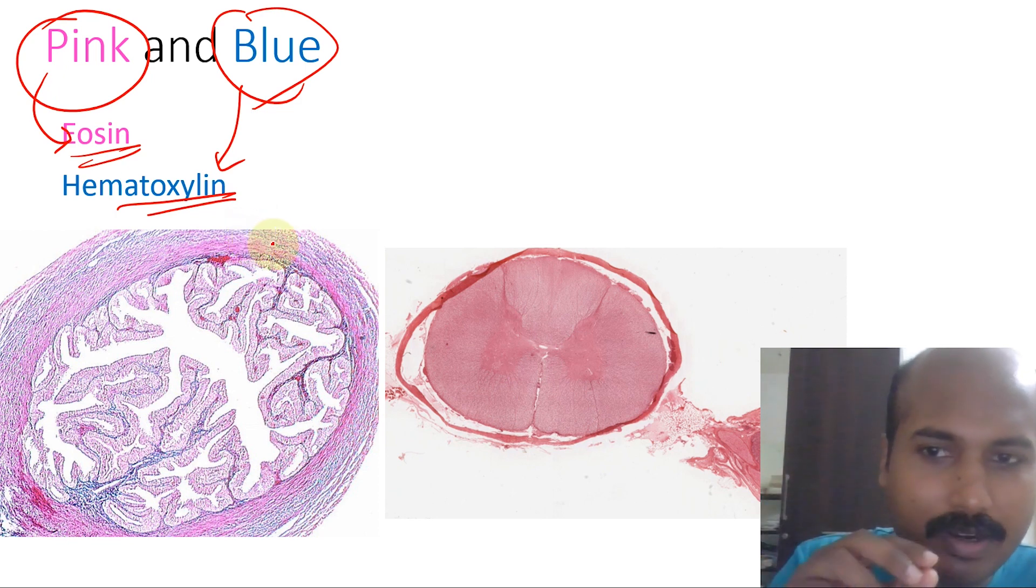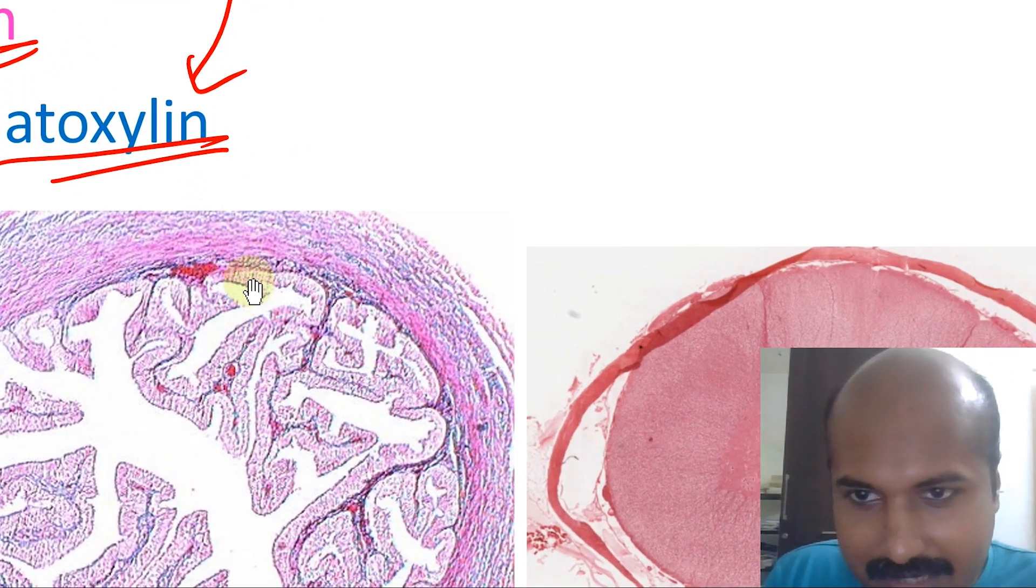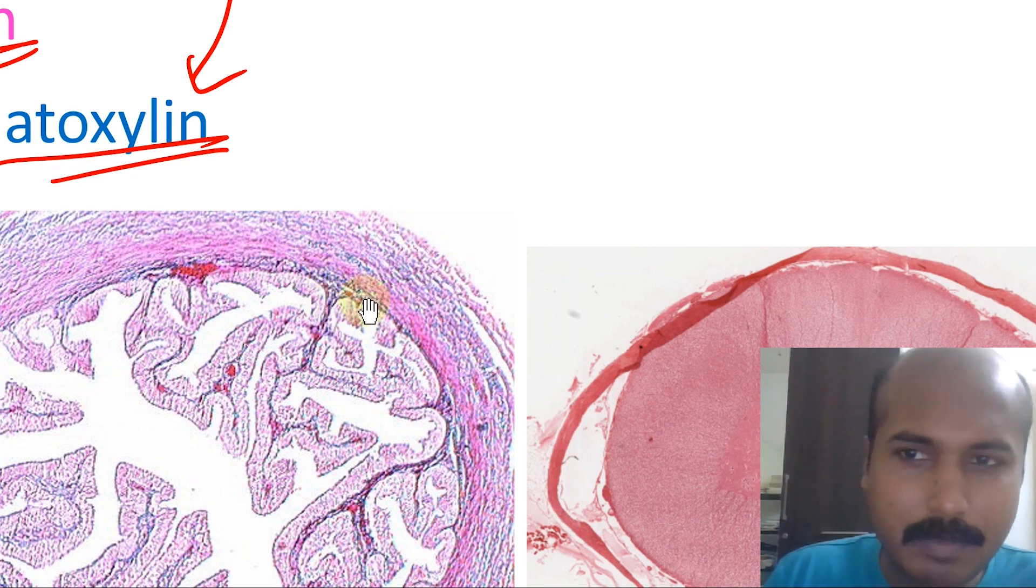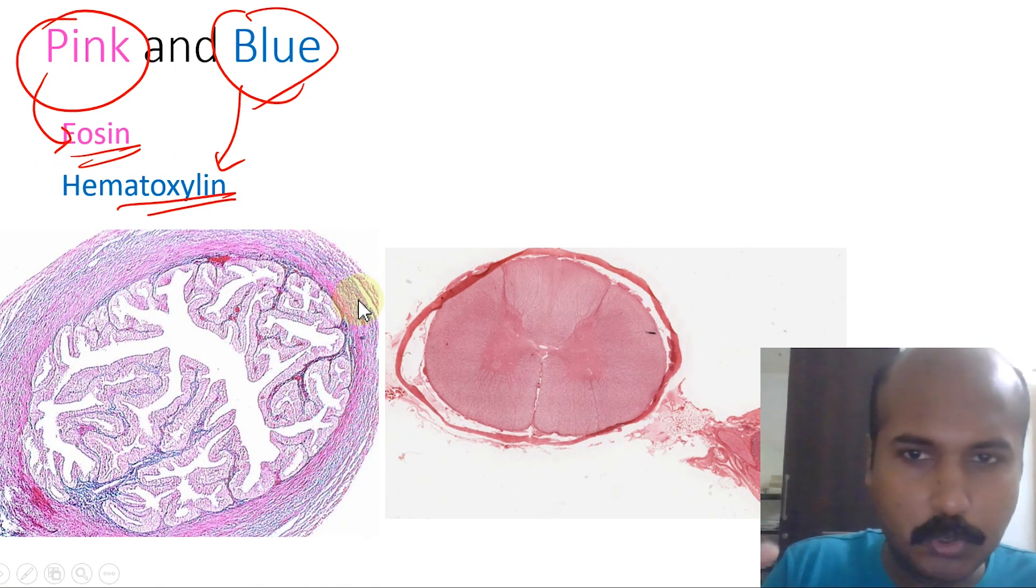Eosin is a dye, hematoxylin is also a dye. These two dyes are used to paint, literally painting sub-components of this tissue. For example, here you're seeing these parts as pink and these parts you can see as a lot more bluish. Basically, blue will be taken by nuclei.